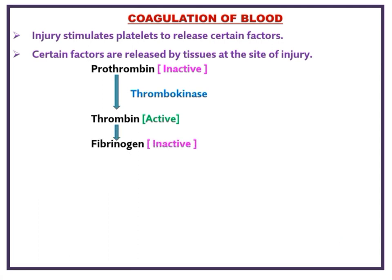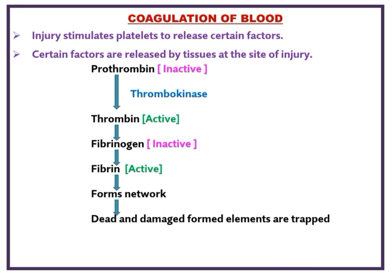Thrombin in turn converts the inactive fibrinogen into active fibrin. These fibrins form a network, and in the network, dead and damaged formed elements are trapped.